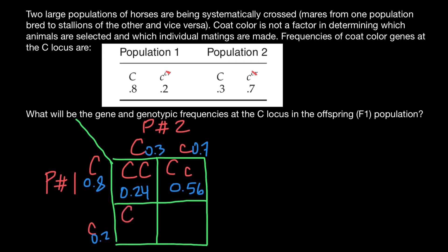In the third cell, we also have a heterozygous genotype, but here the dominant allele comes from population two with frequency 0.3, and the recessive allele comes from population one with frequency 0.2. So 0.3 times 0.2 gives 0.06. In the last cell, we have the homozygous recessive genotype — each recessive allele comes from one population: 0.2 from population one and 0.7 from population two. So 0.2 times 0.7 gives 0.14.